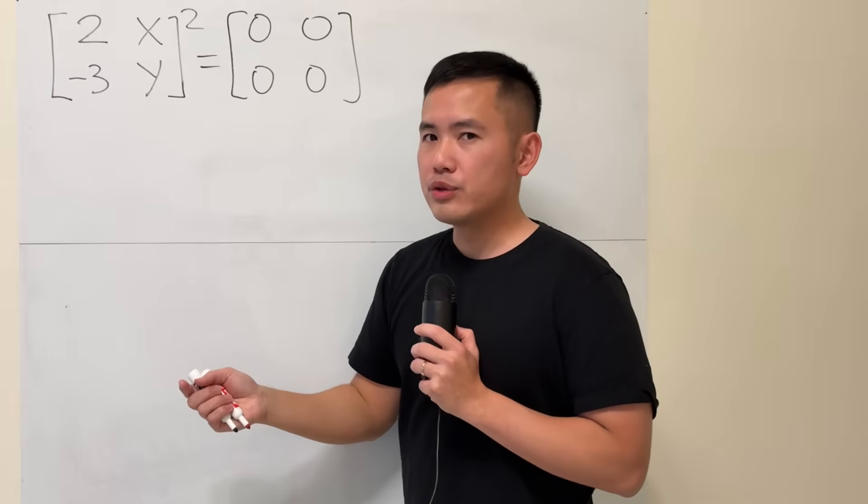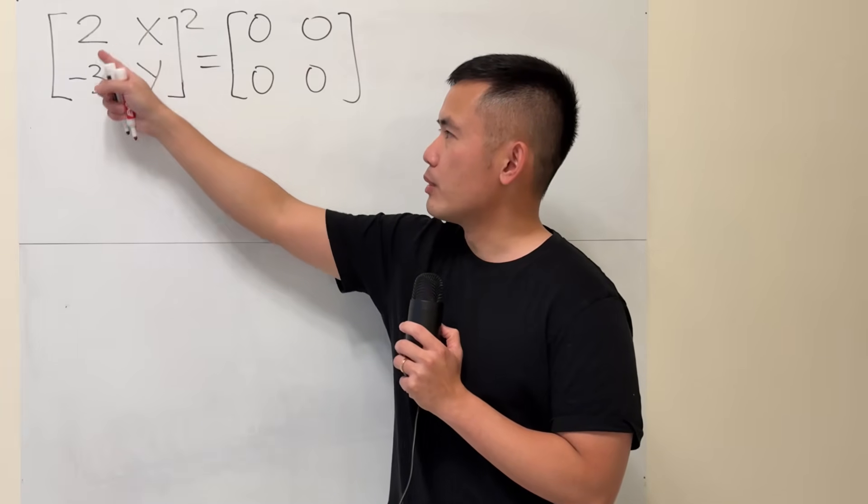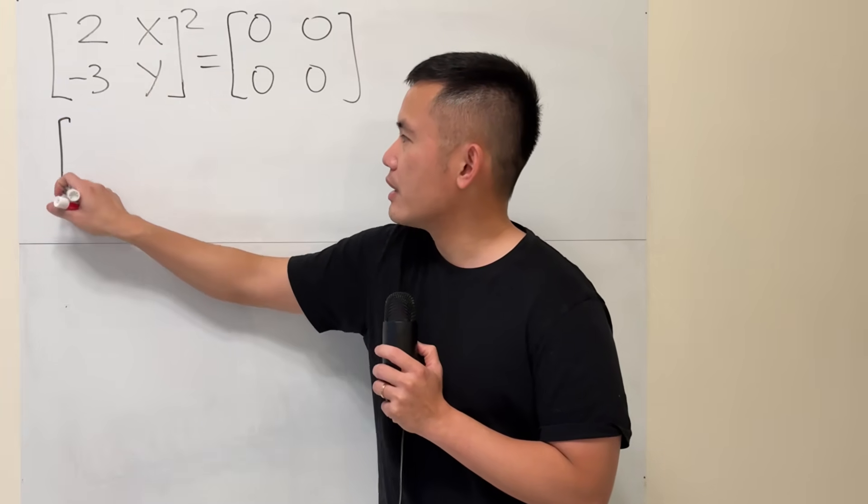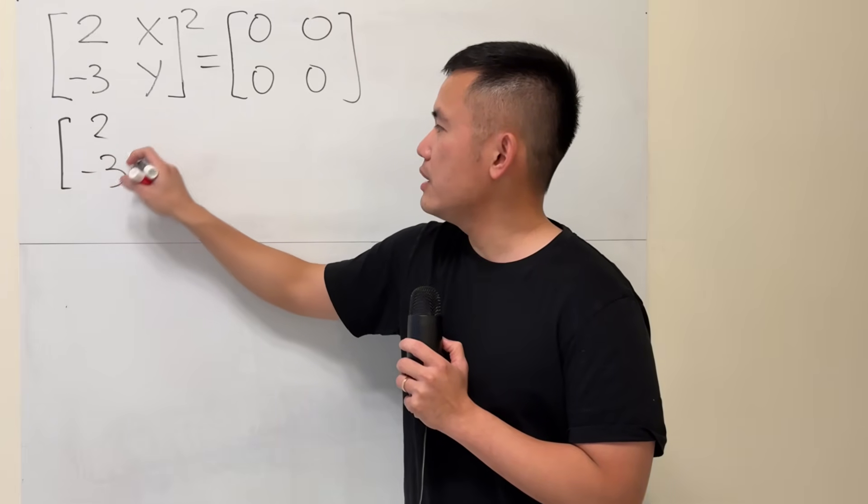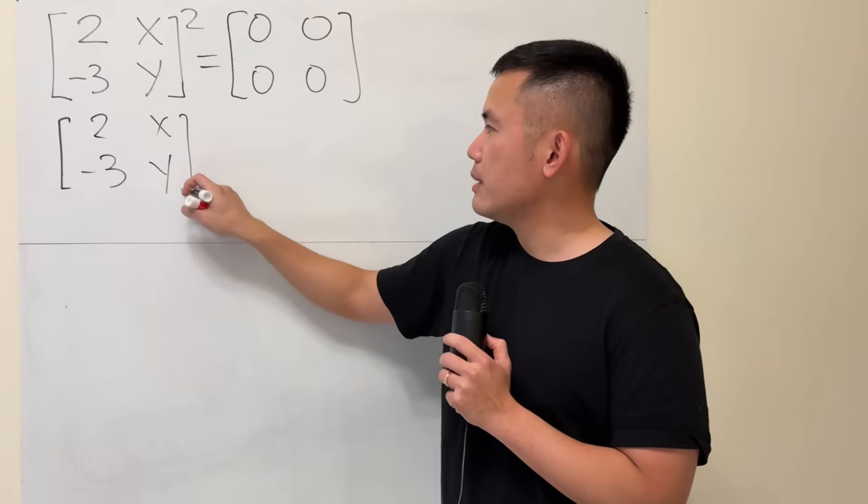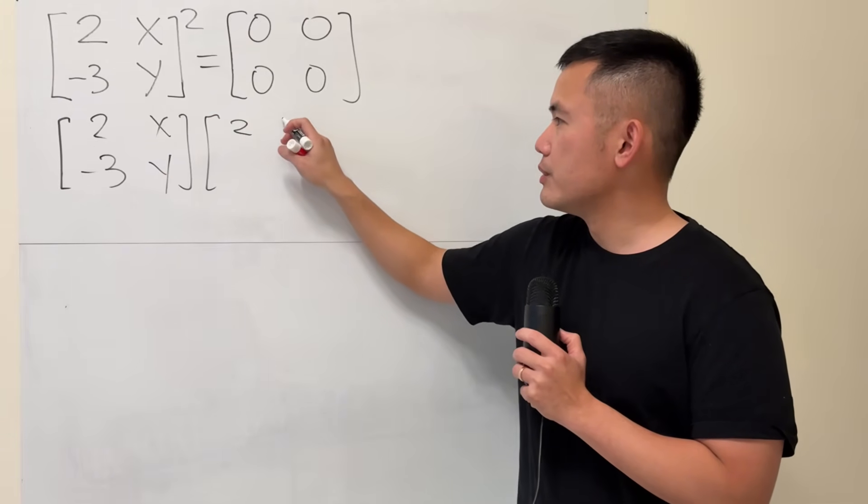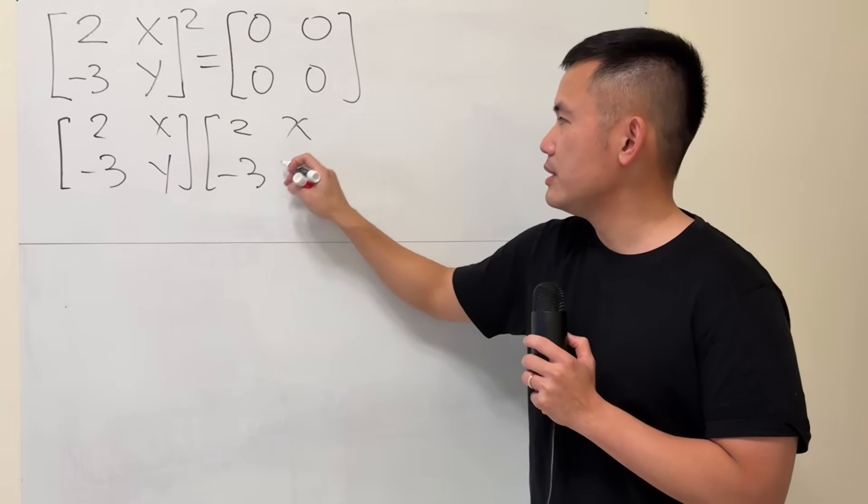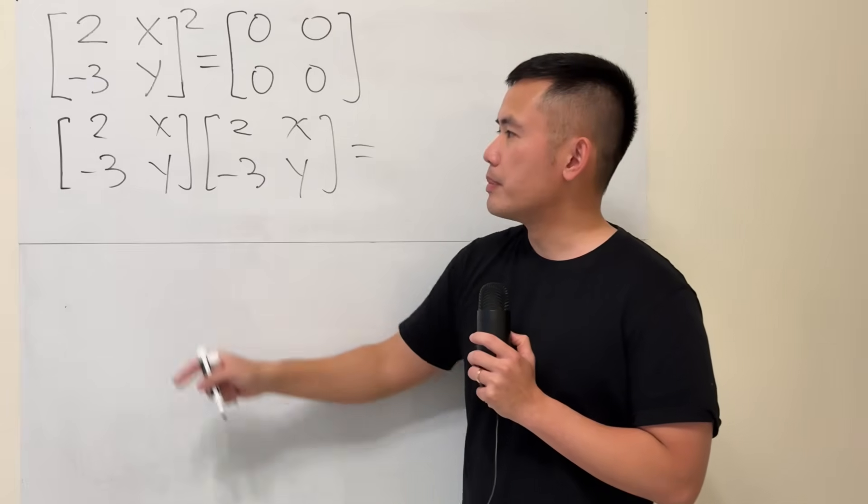Firstly, when we square a matrix, of course, this means that we just have to multiply this by itself. I will just write down, here we have 2, negative 3, and then x, y, like this, and then multiply by itself. 2, x, negative 3, and y. And to multiply matrix, remember, we do the dot product of a row with a column.